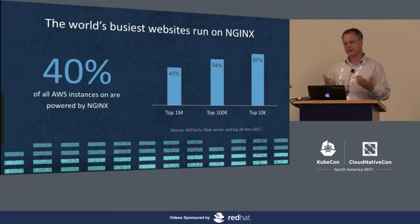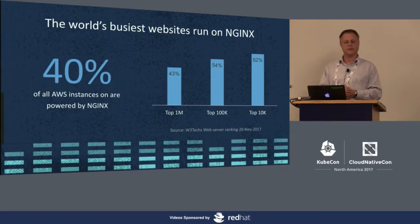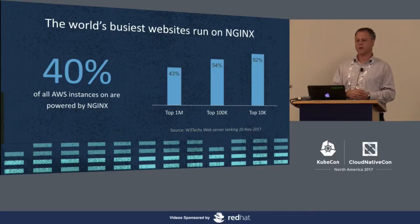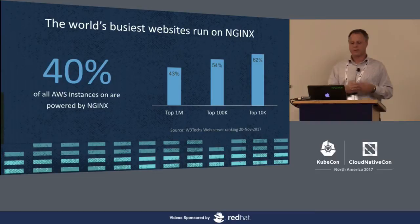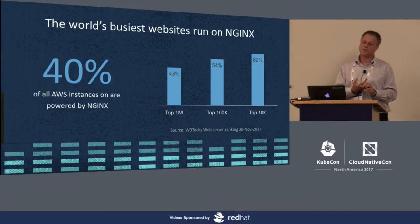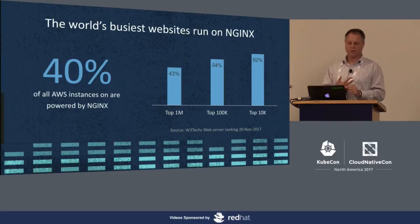Around 40% of all AWS instances are powered by Nginx. If you look at the trends, we are still a growing company. About 62% of the top 10,000 websites are actually running Nginx. We also lead the charge on the top 100,000 websites, and we anticipate that around 2018, we will be over 50% of the top 1 million websites.